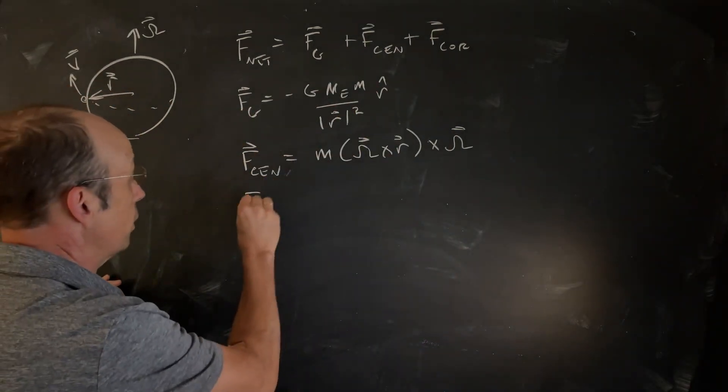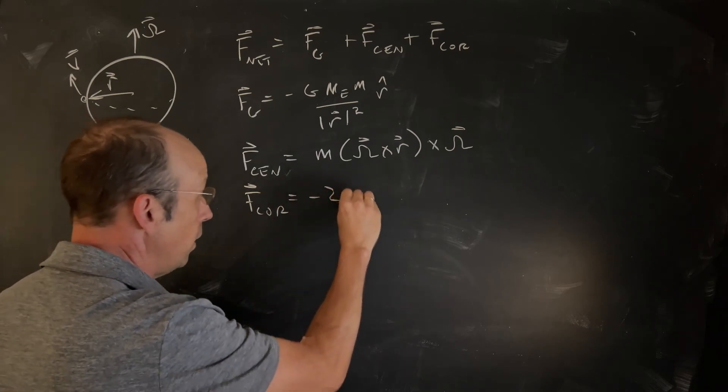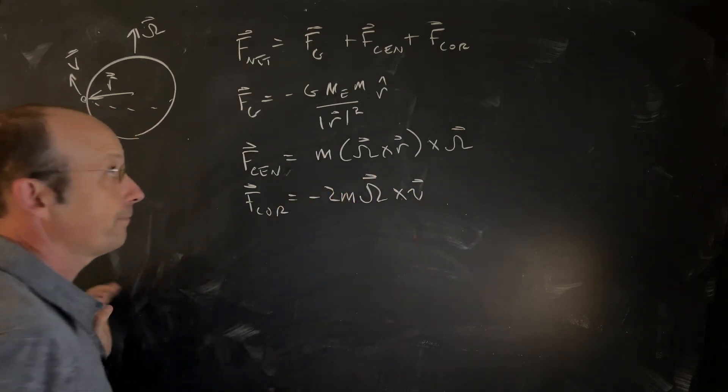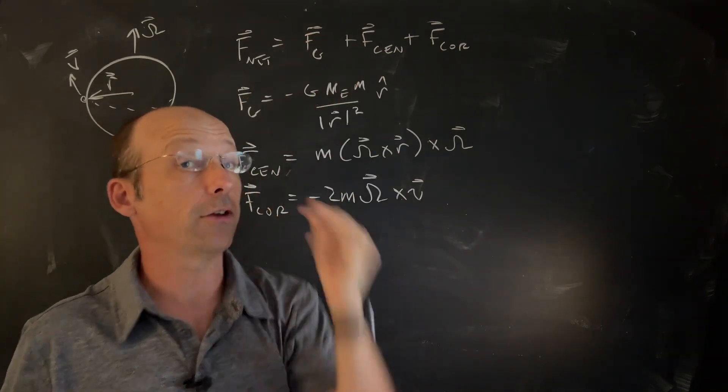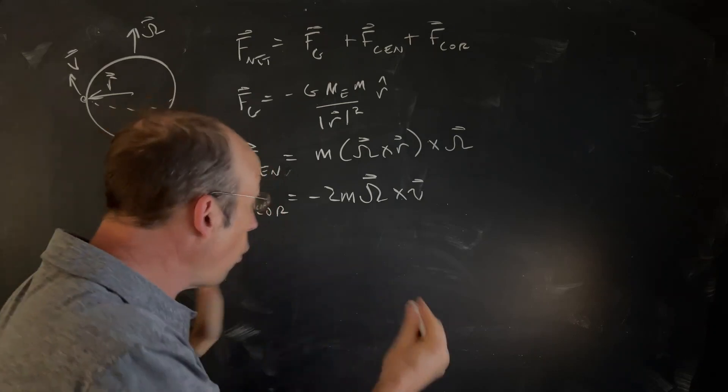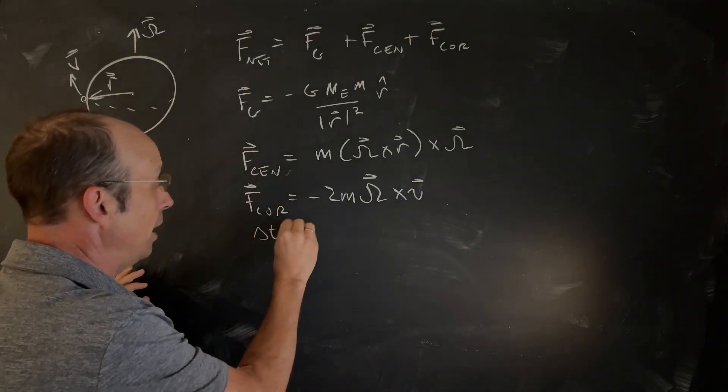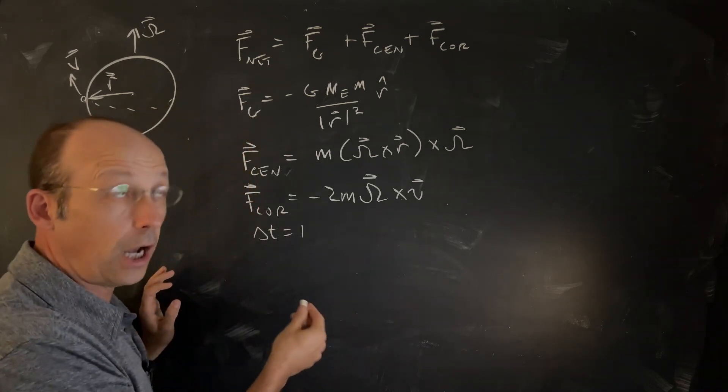And then the Coriolis force Fcore is going to be negative 2m omega cross v. So these three forces change with position and velocity, so I have to do a numerical calculation. The numerical calculation, we're going to break it into small time steps. I'm going to break this into time steps of one second.